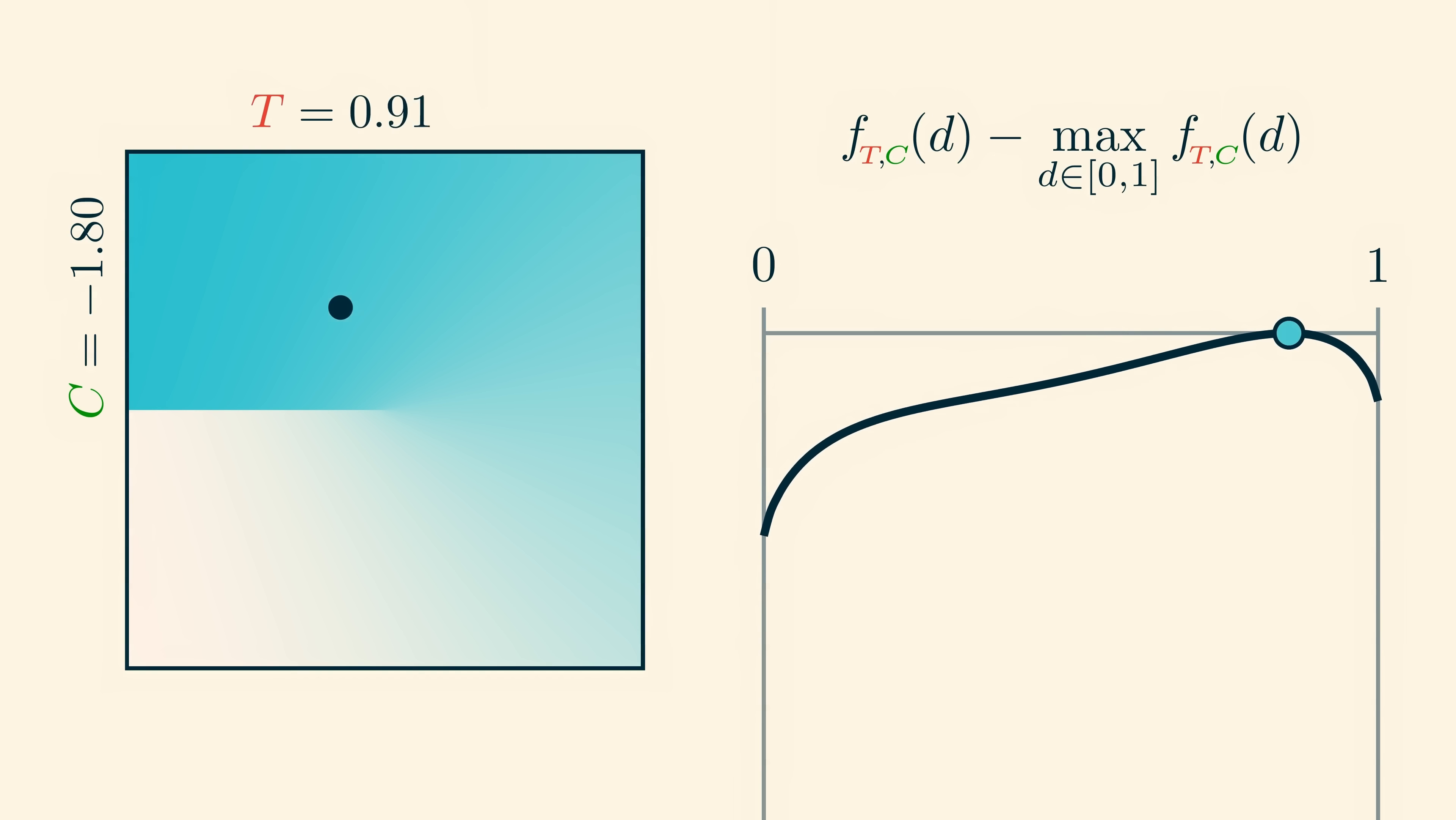Now for low temperature, watch what happens to the maximizer. It suddenly jumps from one place to the other as c crosses minus 2. This is exactly what causes the phase transition. It's simply due to the fact that for low temperatures, the function f tc is not concave, and so even as the function itself changes smoothly, the maximizer can jump from one location to another discontinuously.